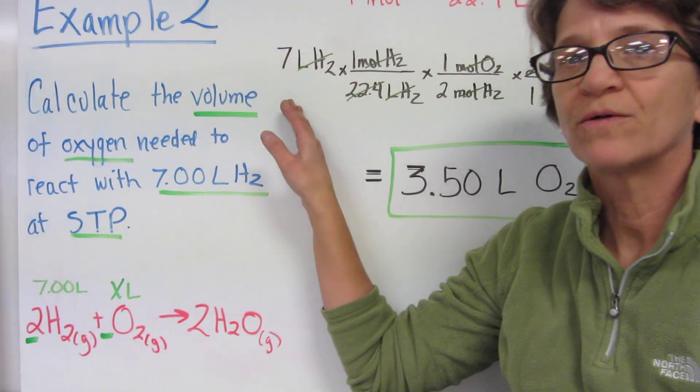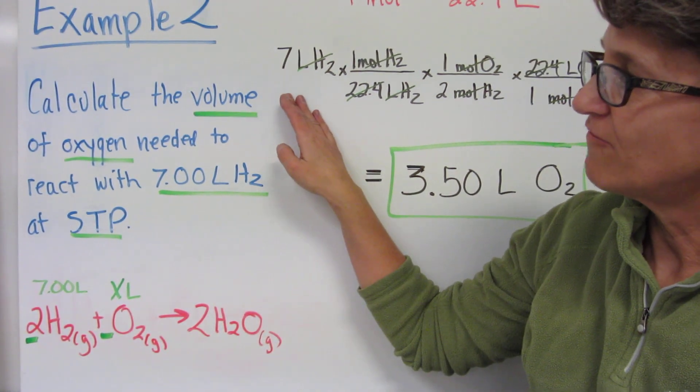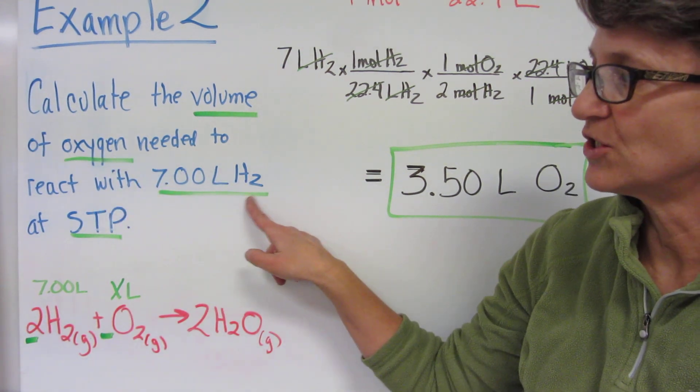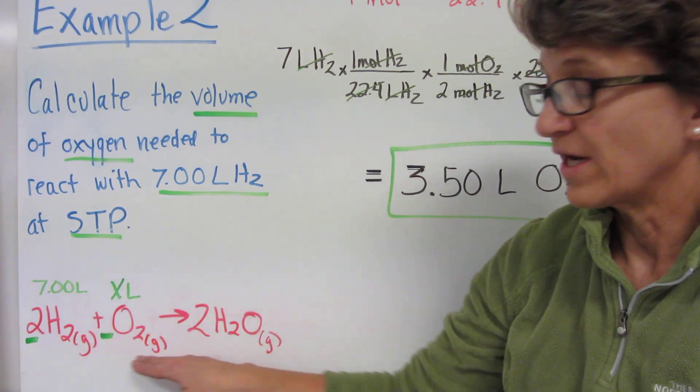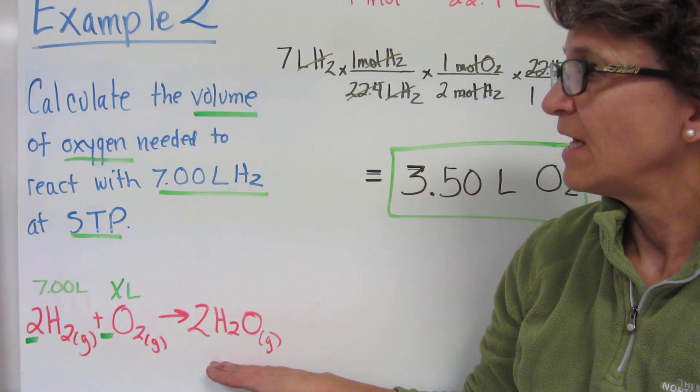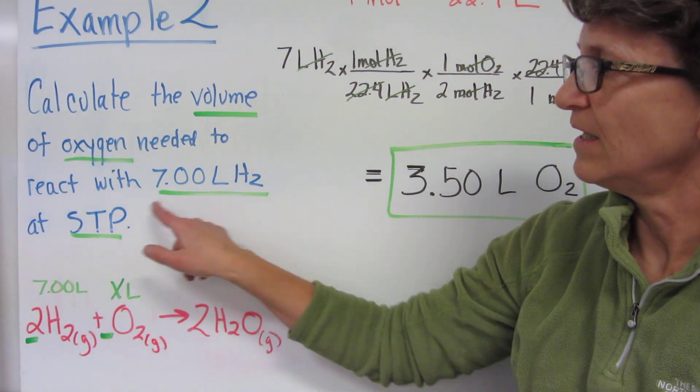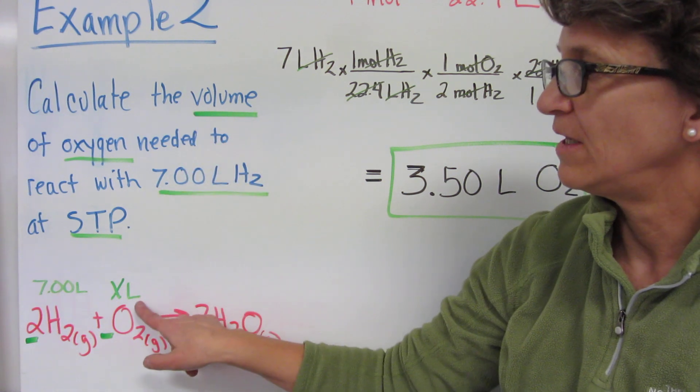This time we'll do some stoichiometry with our calculation. Calculate the volume of oxygen needed to react with seven liters of hydrogen at STP. Write a balanced equation, and then list what you already know. Everything's at STP, and I have seven liters of hydrogen, and I want the volume of oxygen.